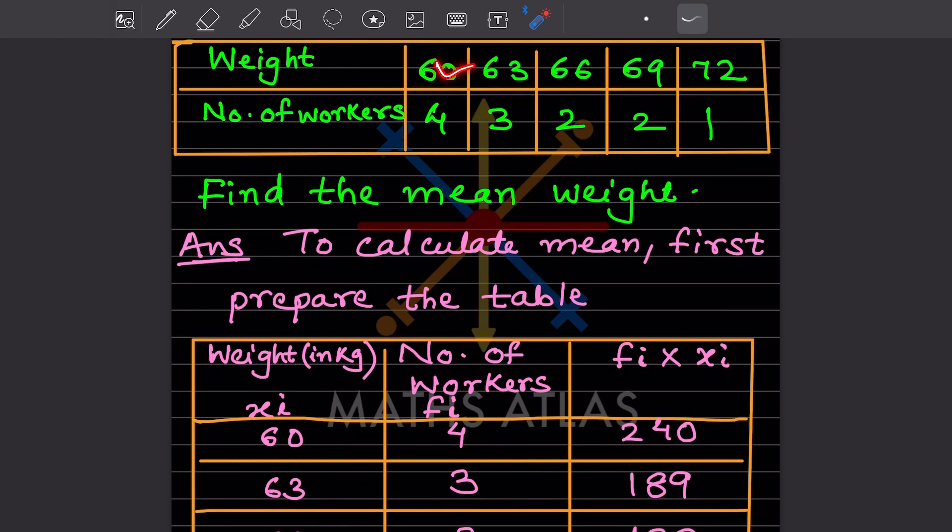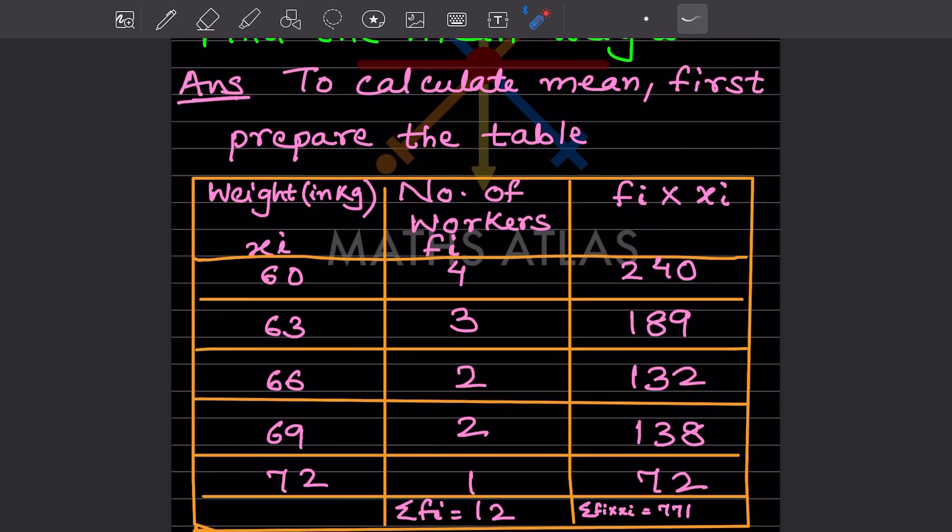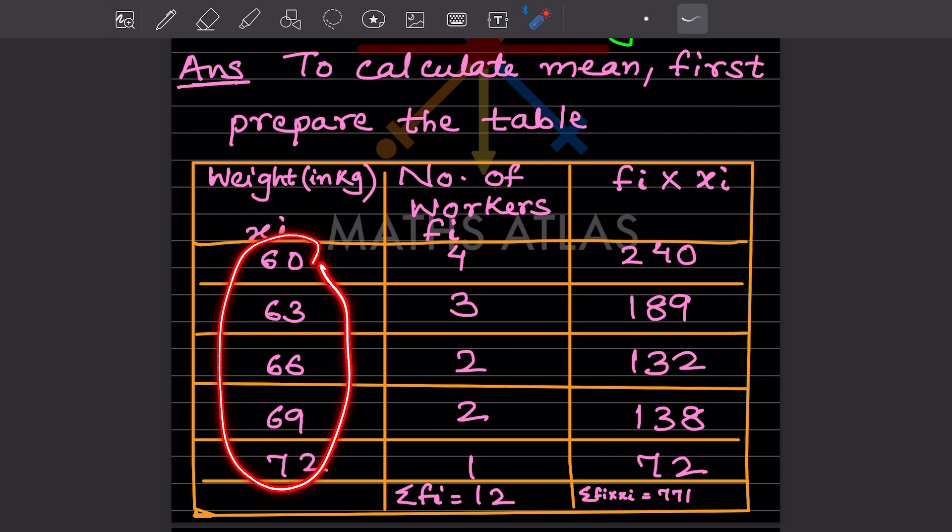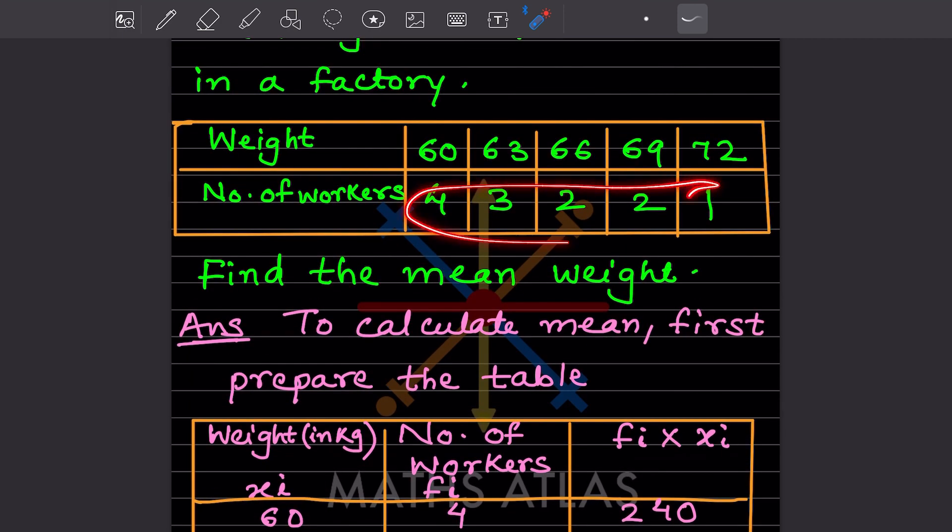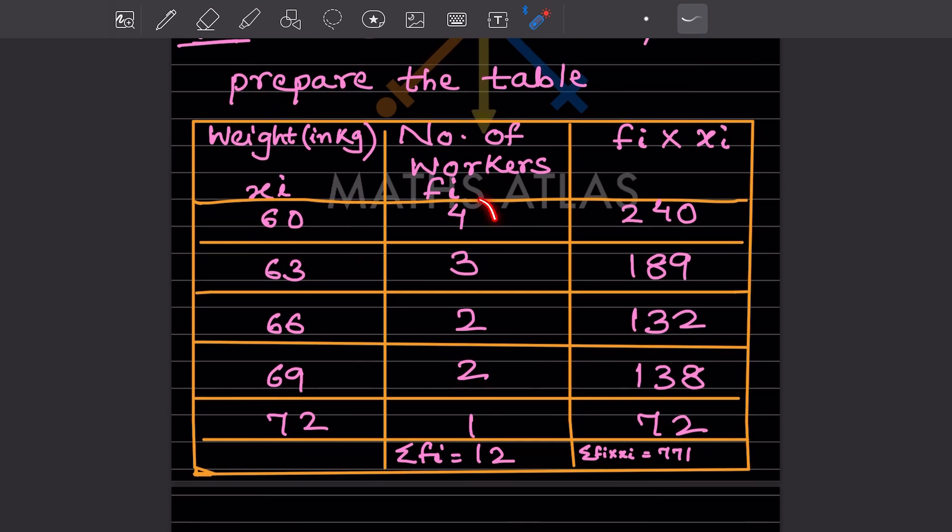It's given here: 60, 63, 66, 69, and 72. You will write this in a vertical way. The number of workers are given over here, that also you will write vertically.